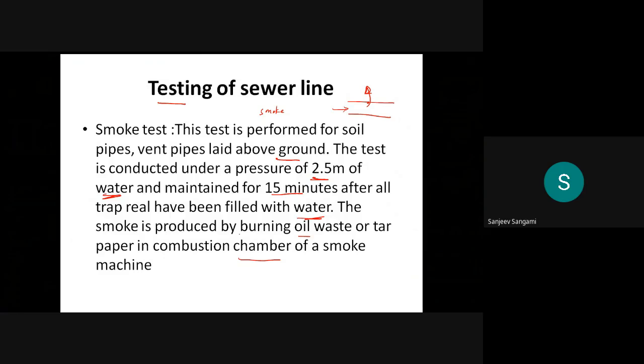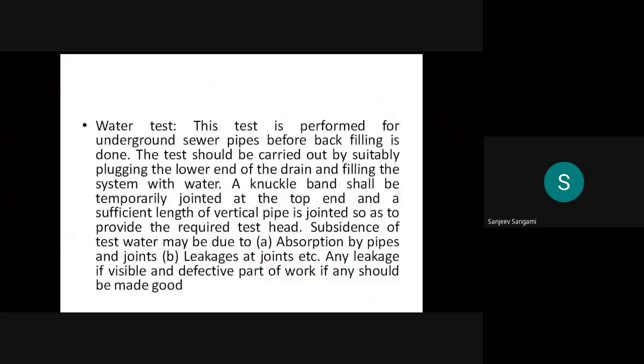The smoke is produced by burning oil waste or tar paper in the combustion chamber of a smoke machine. Why do we normally use oil waste? Because it consists of 80% carbon. Once any leakage is there, the black smoke will appear very easily in the atmosphere during daytime, so that's why oil waste and tar paper are used in the combustion chamber.